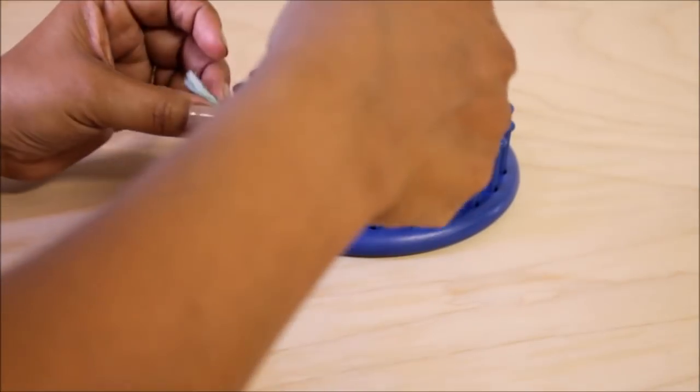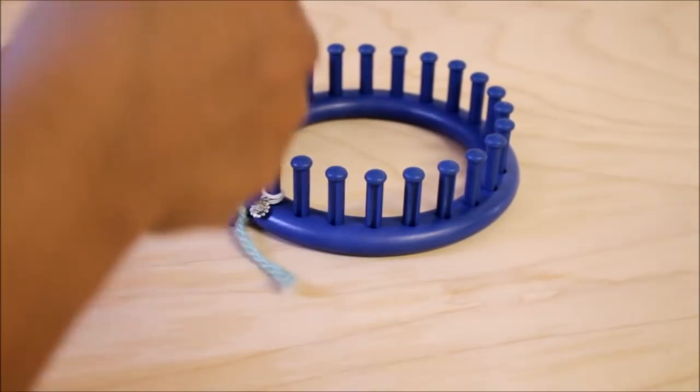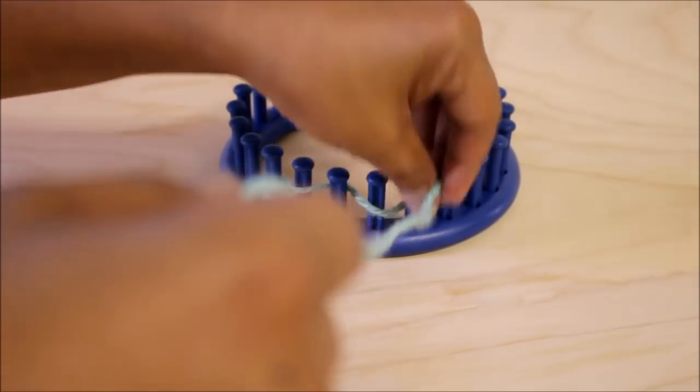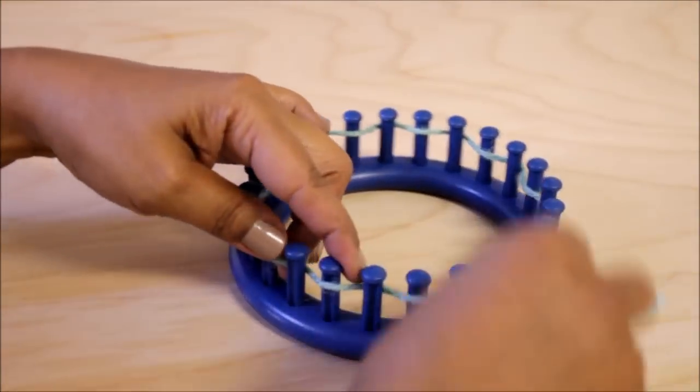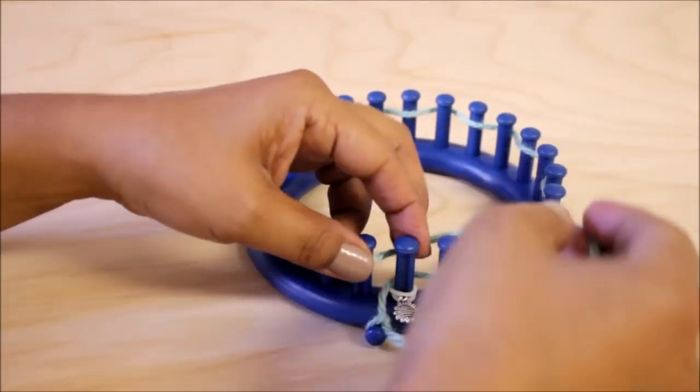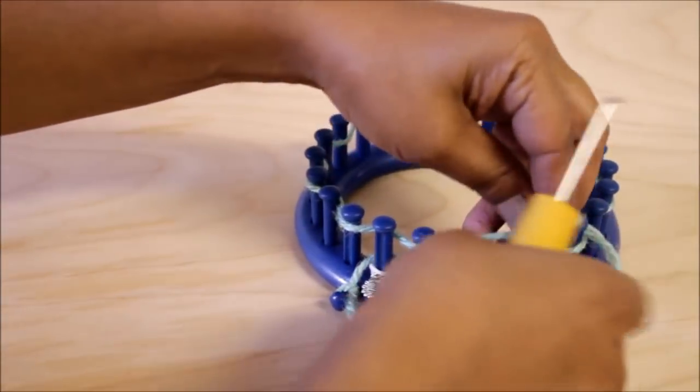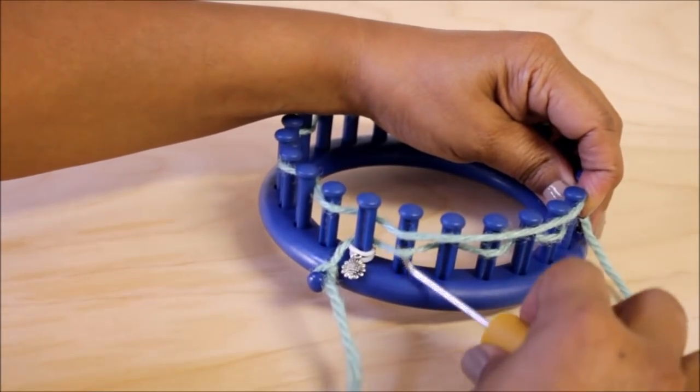Let's start with the drawstring cast on. Secure the working yarn to the anchor peg with a simple knot. You could do a slip knot if you'd like. Then we're going to zigzag between every peg and go all the way around to get back to the front. You're basically skipping that first peg. Then lay the working yarn over your pegs loosely.